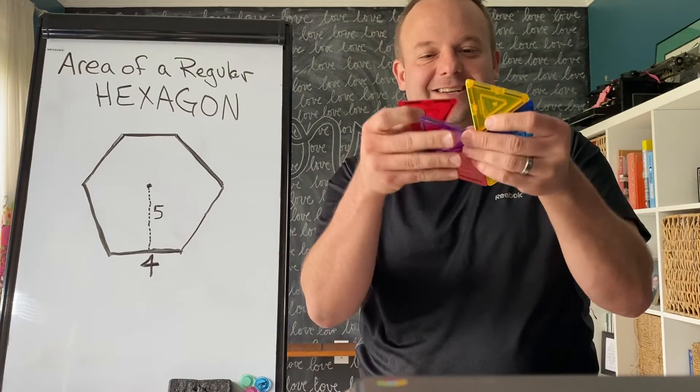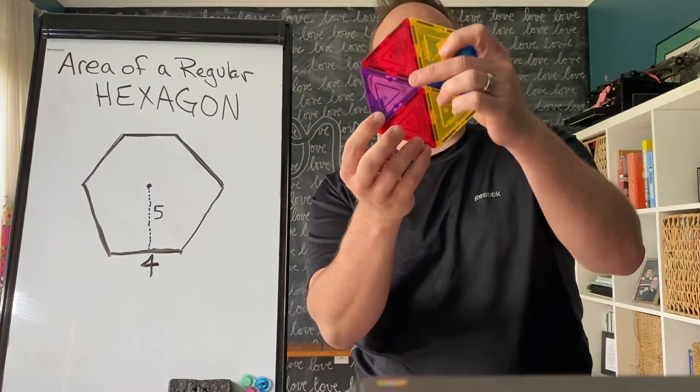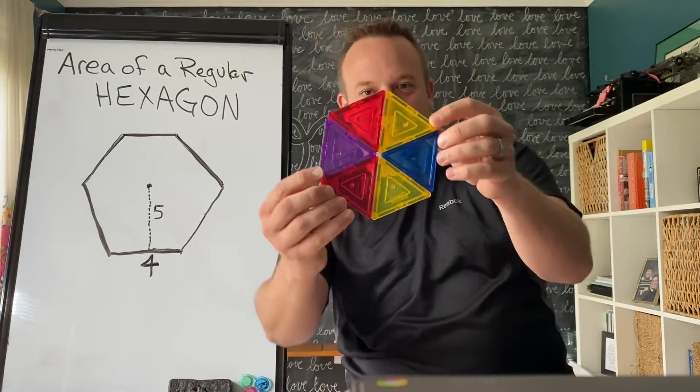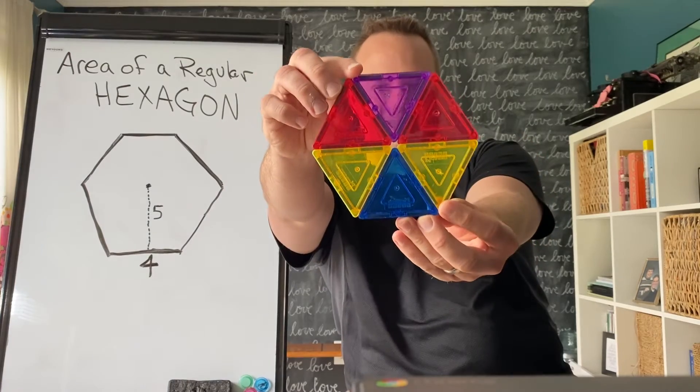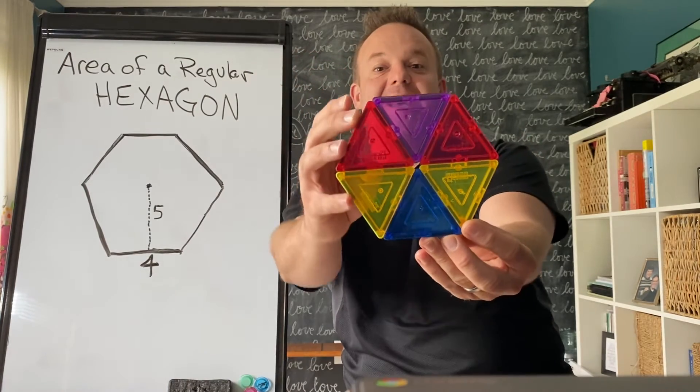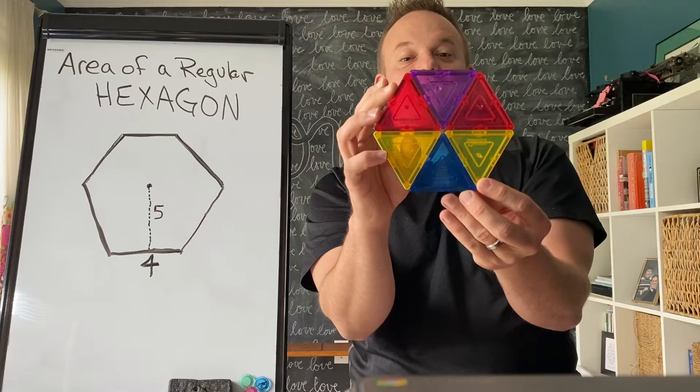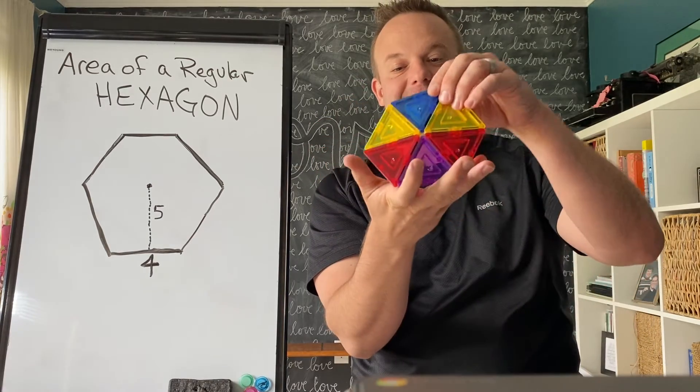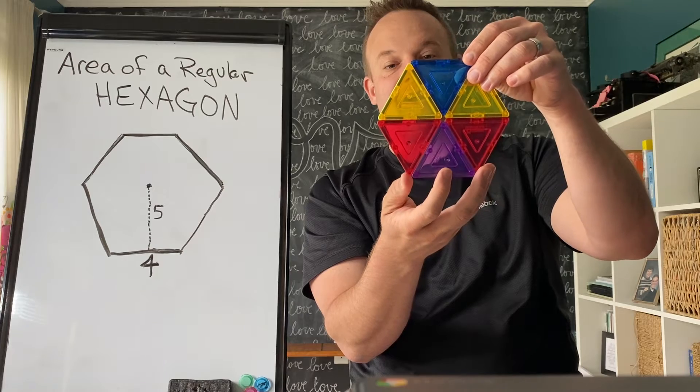A regular hexagon, let's try this again, is made up of how many congruent triangles? So a regular hexagon is made up of 6 congruent triangles. Take a visual of this - 6 congruent triangles for a regular hexagon.